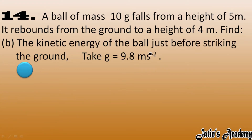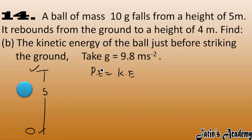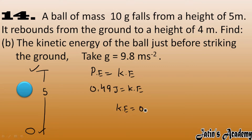Now we calculate the kinetic energy of the ball just before striking the ground. The ball is at a height of 5 meters and moving downward. According to the conservation of energy, the potential energy is completely converted into kinetic energy. Since potential energy was 0.49 joule, the kinetic energy just before striking the ground is also 0.49 joule.